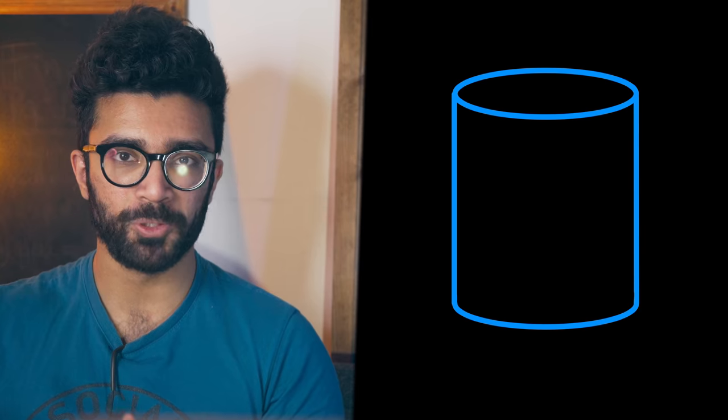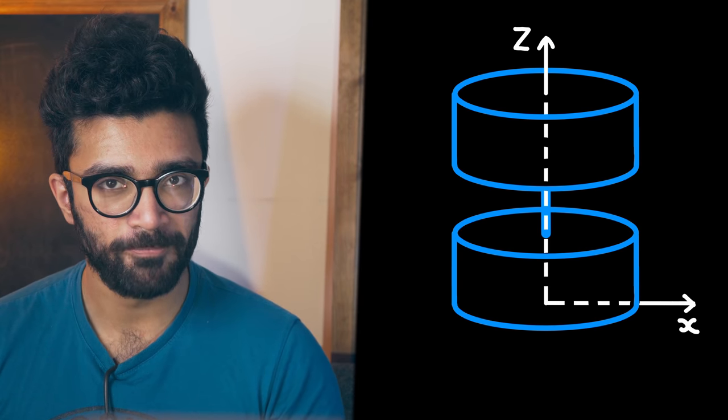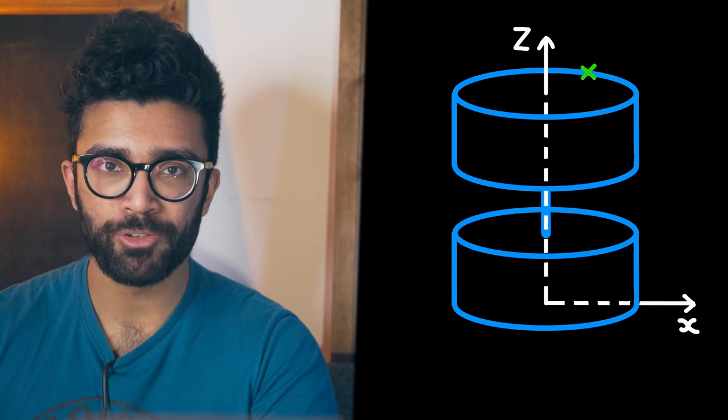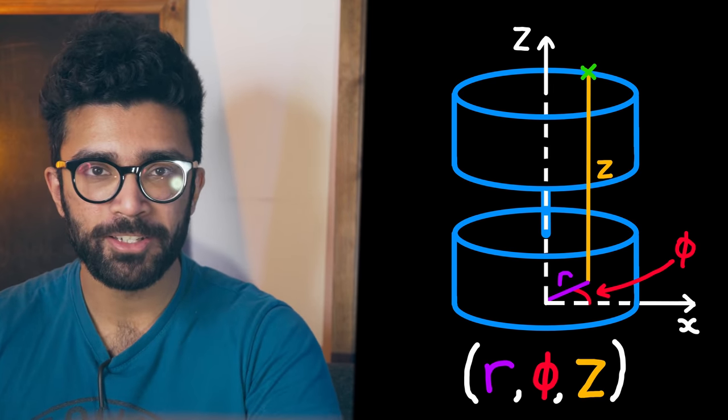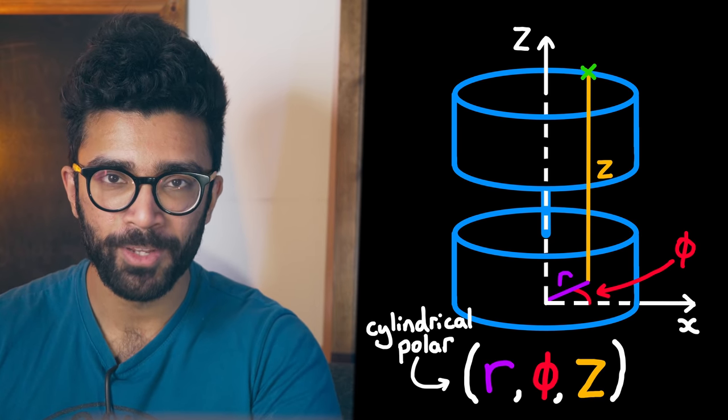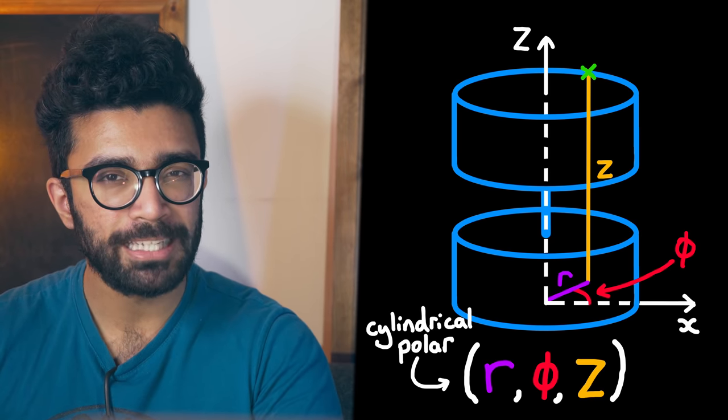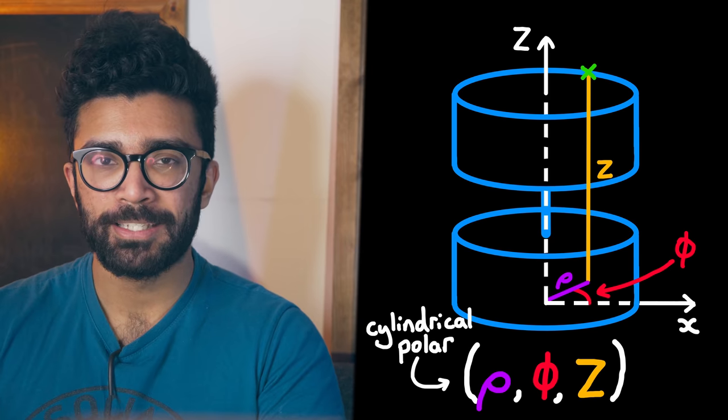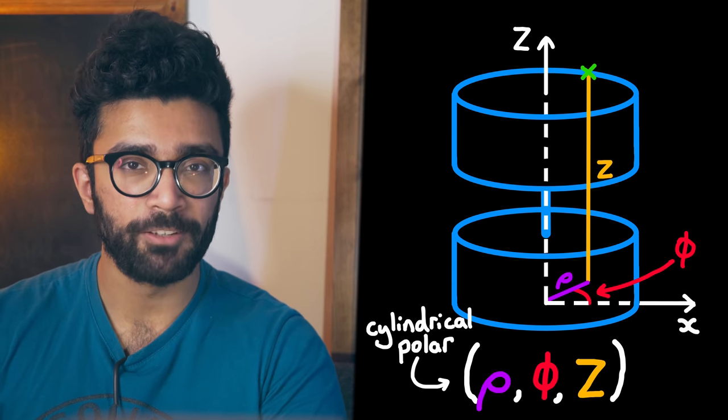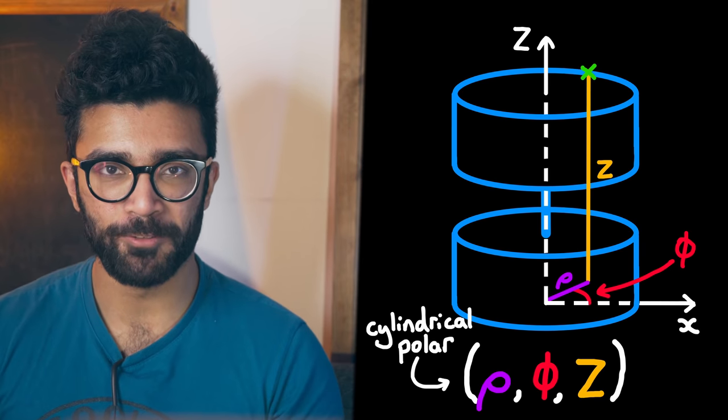This way, we can easily describe any point on the cylindrically symmetric object using r-phi-z. This coordinate system is known as the cylindrical polar coordinate system. By the way, sometimes you might see the Greek letter rho instead of r when talking about cylindrical polar coordinates. They're both representing the same thing, it's just convention to use one or the other. Different people use different letters.